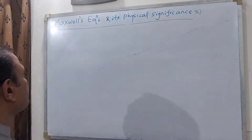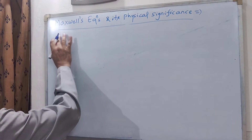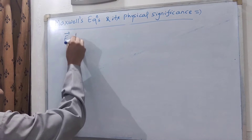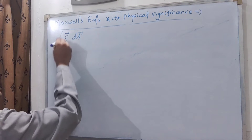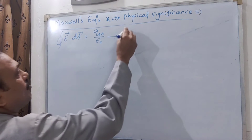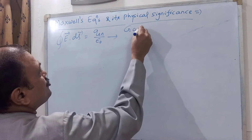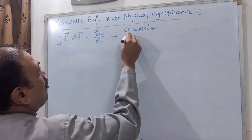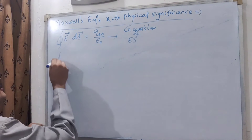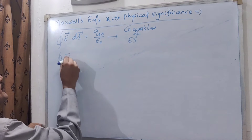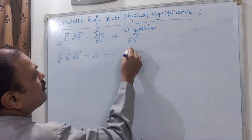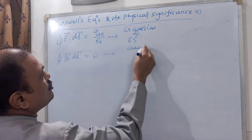In the first equation, E·ds = q_enclosed / ε₀. This is Gauss's law of electrostatics. The second equation is B·ds = 0. This is Gauss's law of magnetostatics.